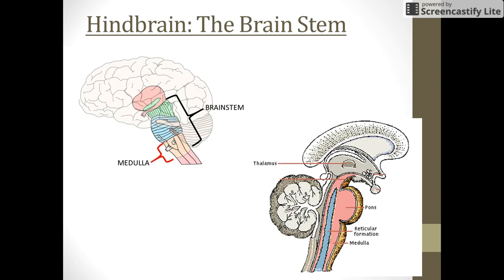Looking at the diagram, the whole inner area is the brainstem, and all of this is known as the hindbrain. The brainstem is made up of four areas: the medulla, the pons, the reticular formation, and the thalamus. What hangs off the back is the cerebellum. The medulla is located at the bottom, the reticular formation inside the medulla and pons, the pons above the medulla, and the thalamus sits at the top.